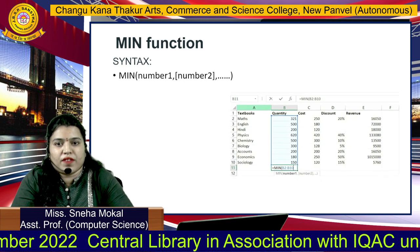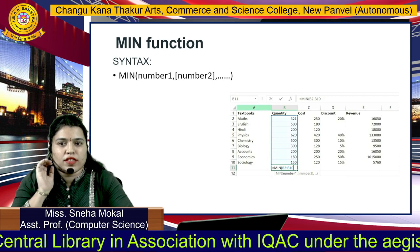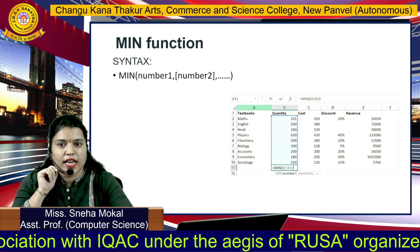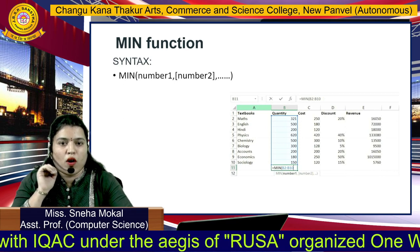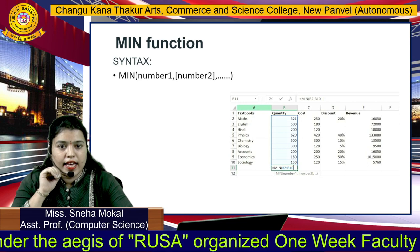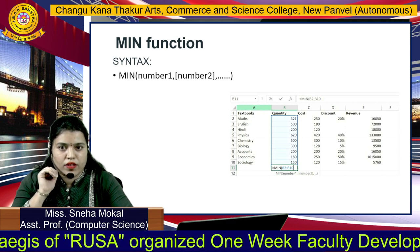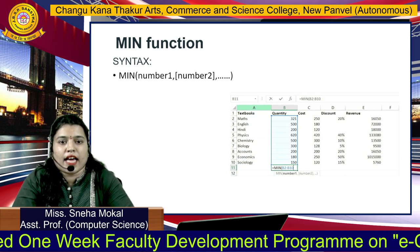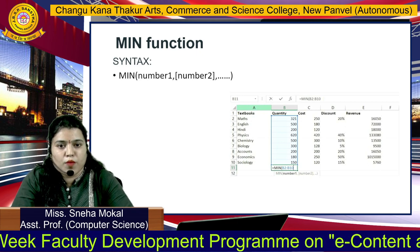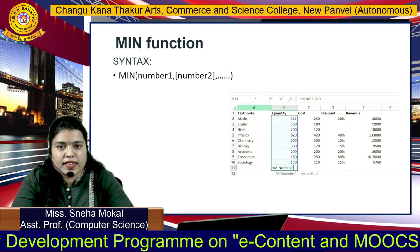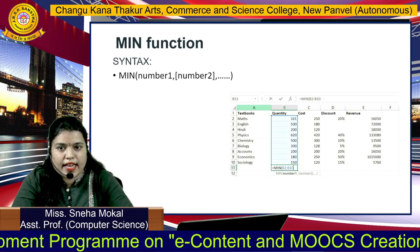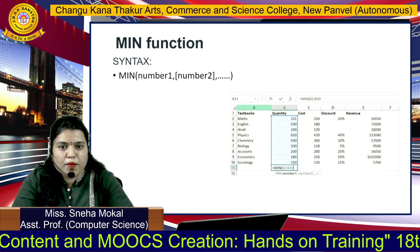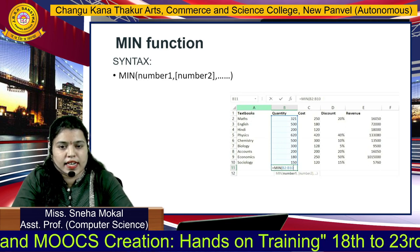उसके बाद है minimum function. Maximum क्या होता है — large number आपको find करके देता है. और minimum function क्या होता है — आपका जो भी smallest number रहेगा वो आपको find करके देता है. यह भी MAX की तरह ही होता है, only यह opposite होता है. इसका भी parameter numbers ही रहेंगे — आपको numbers ही इसमें डालने हैं, जिसमें से आपको minimum number find करना है.